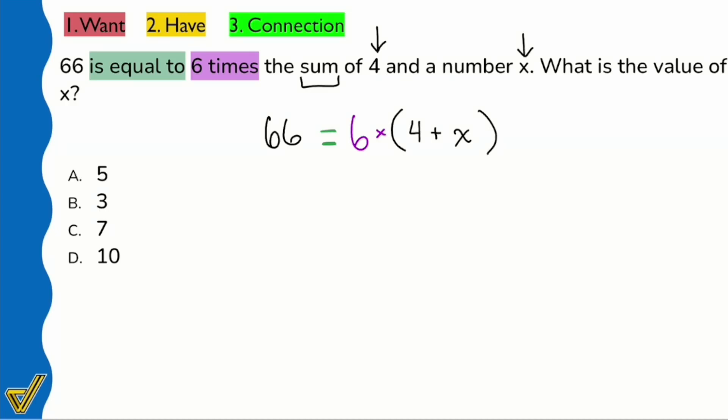We're saying six times the sum first, then multiply by six. Now we're going to get rid of that parentheses by distributing that six. We'll have 66 still on the left side, six times four is 24, and six times x is 6x.